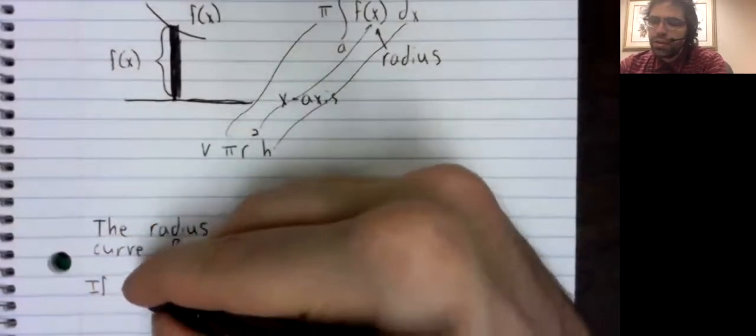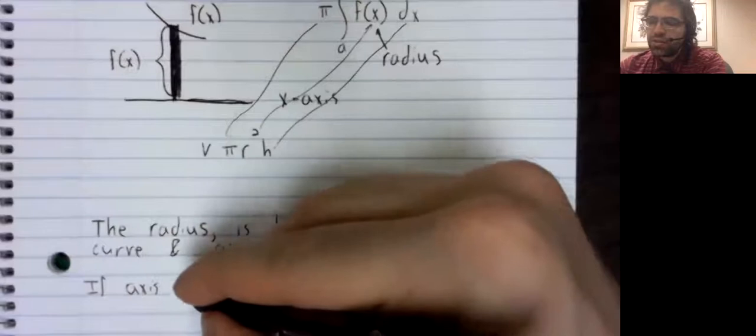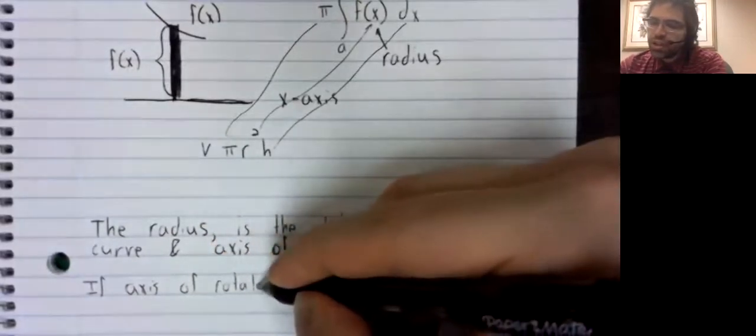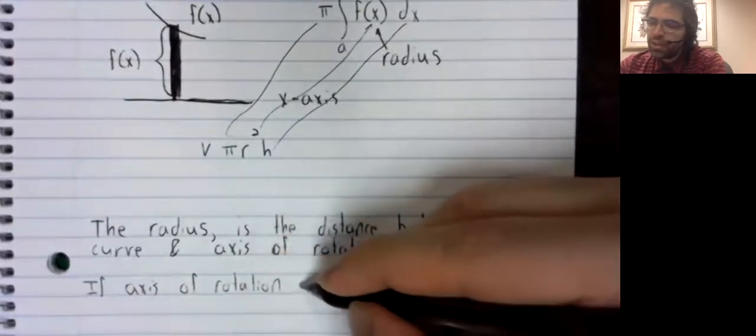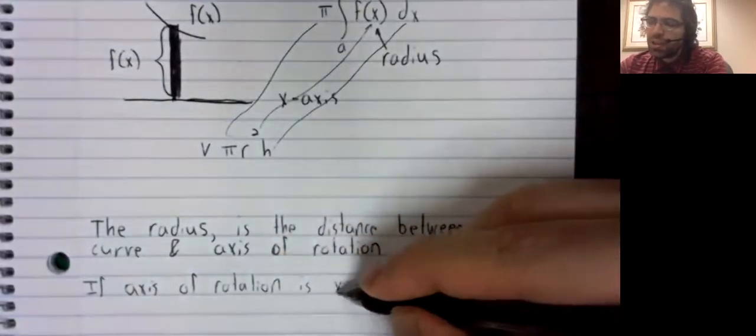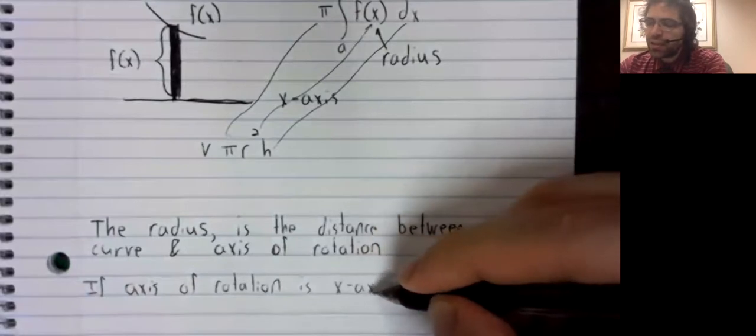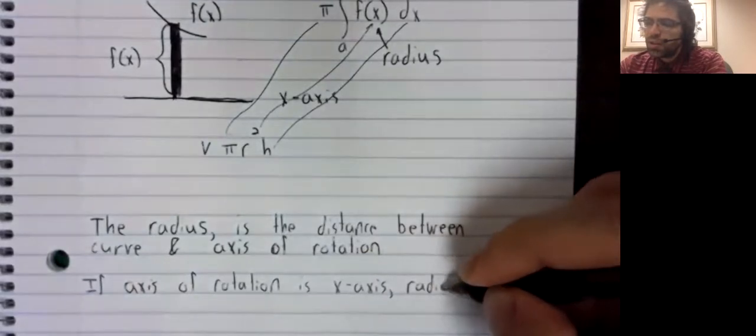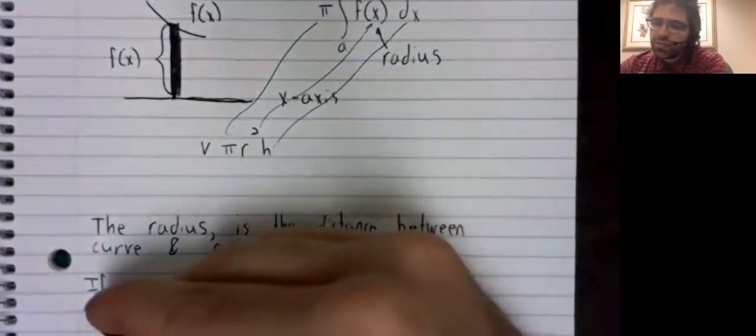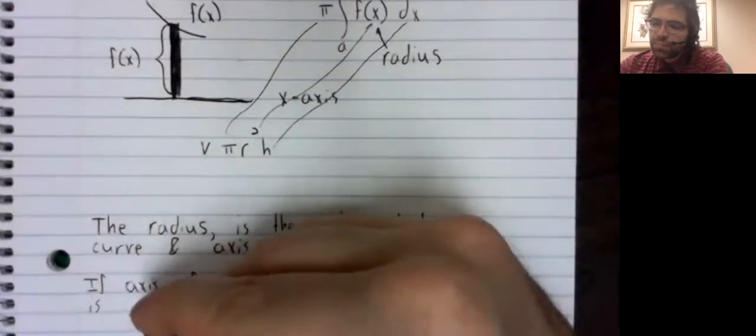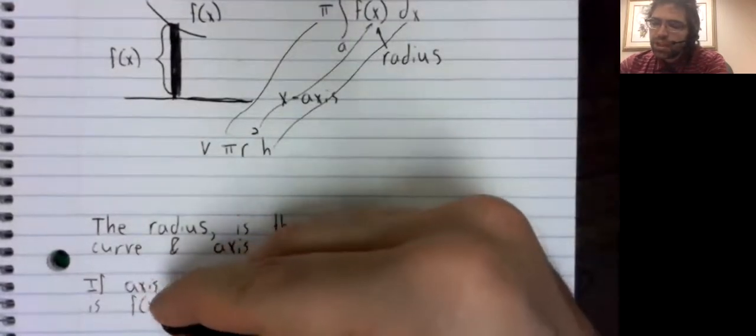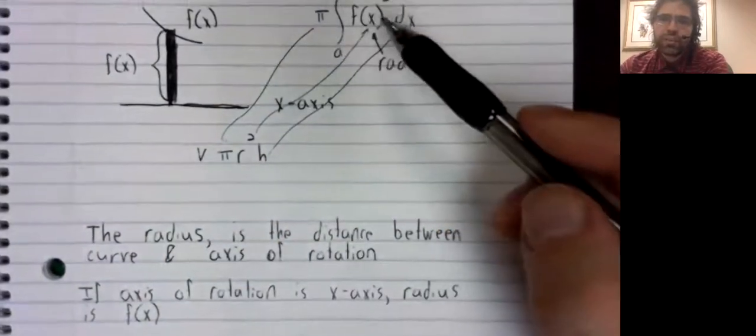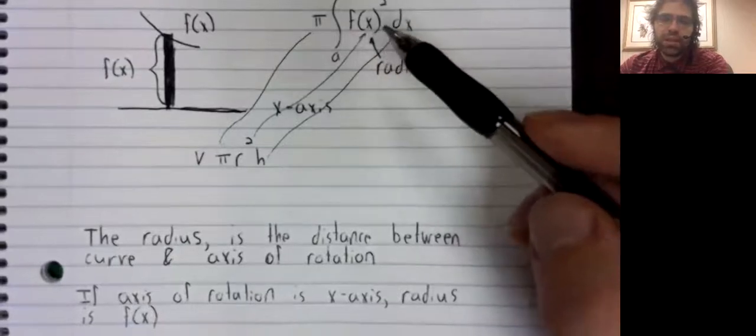If the axis of rotation happens to be the x-axis, the radius is just the function, and we get this thing up here.